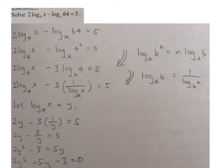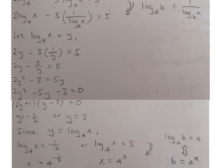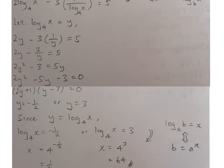Now I let log₄(x) equals to y. So it becomes 2y minus 3(1/y) equals to 5. For this equation, I can multiply y throughout. I will have 2y² minus 3 equals to 5y, and it transforms into a quadratic equation.